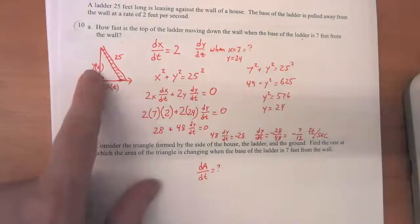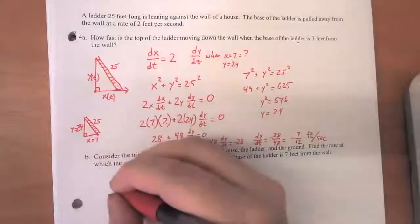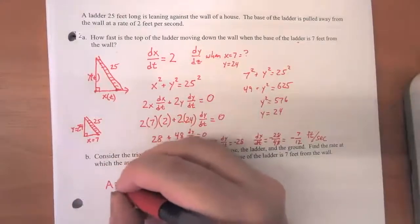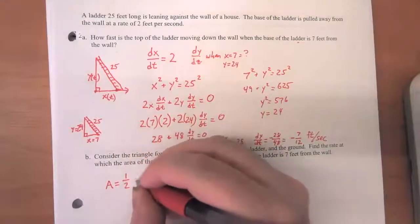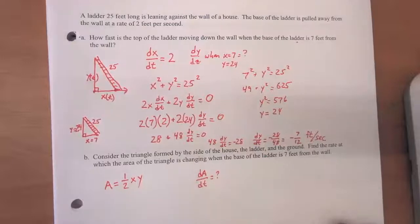Well, this is a right triangle, so it's very convenient. These are the height and the base. So the relationship between those distances is that the area is one half the base times the height. So A is equal to one half xy.